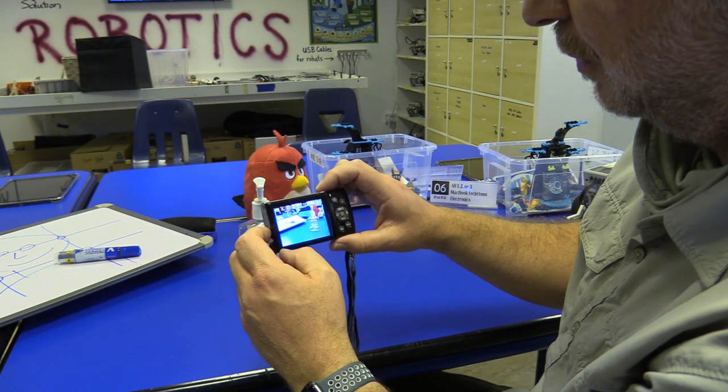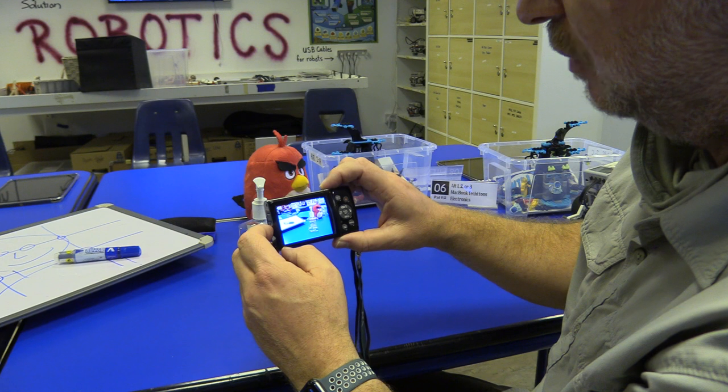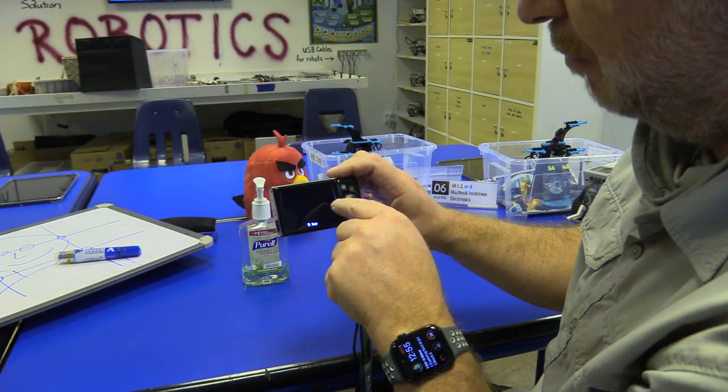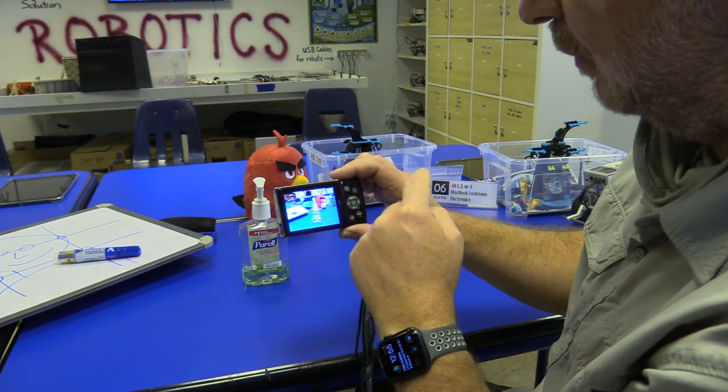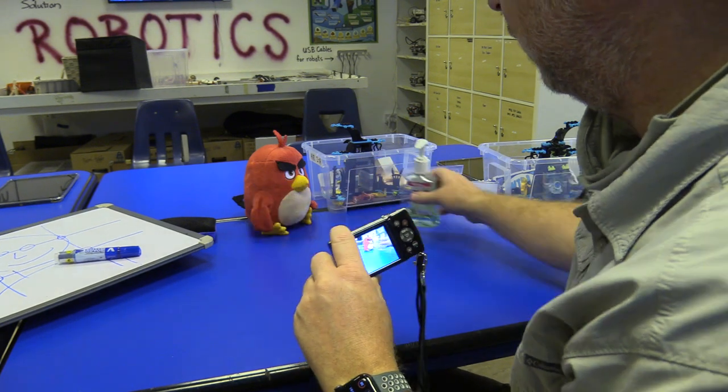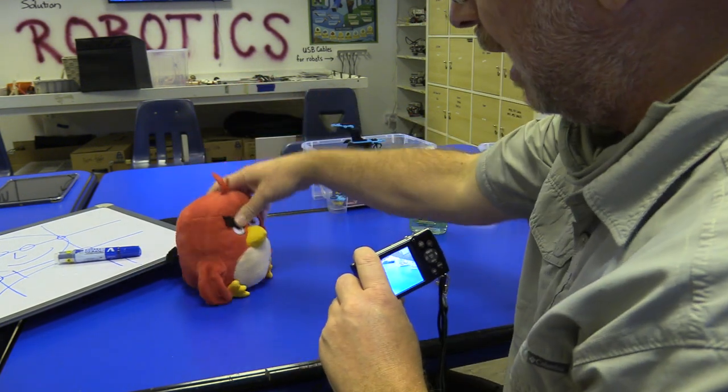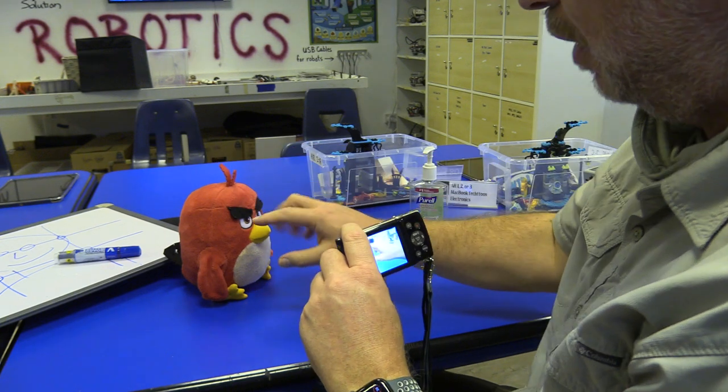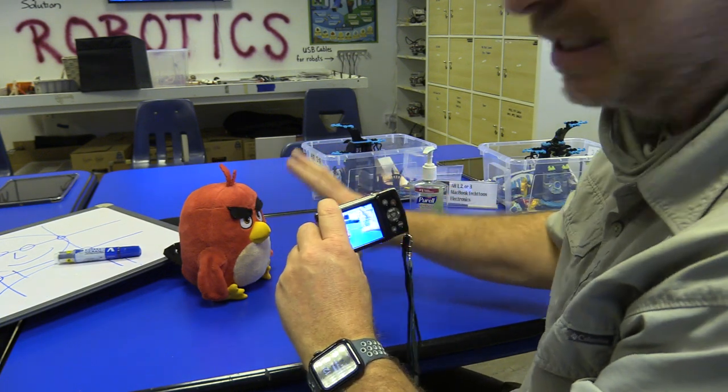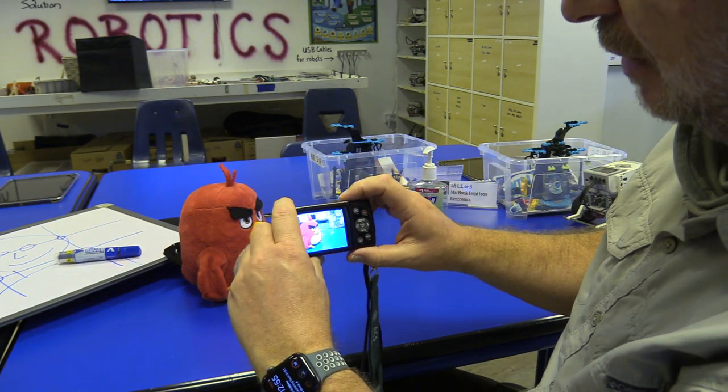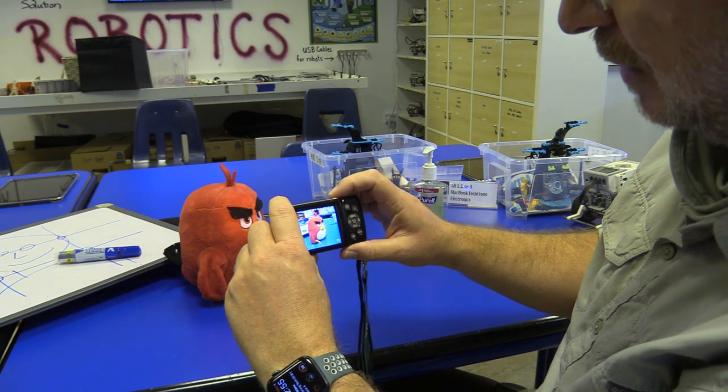I'm just going to move it over slightly, working with that rule of thirds to make things more interesting. This one doesn't work because the Angry Bird behind him is looking off to that side, which brings up the next part: if it's something with eyeballs or direction, you want them to look towards the empty space.